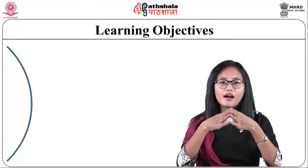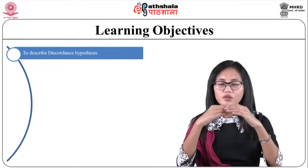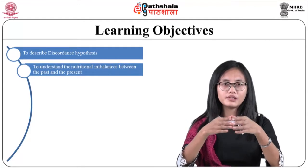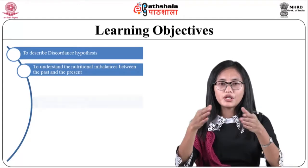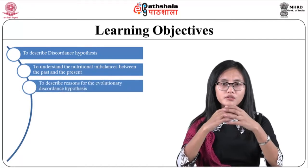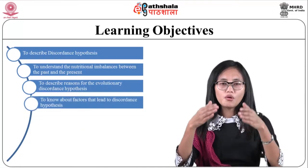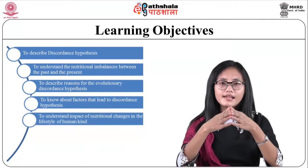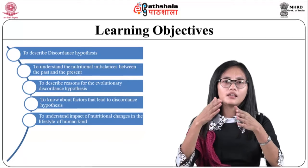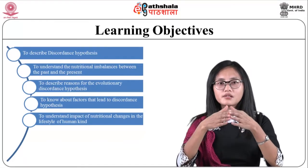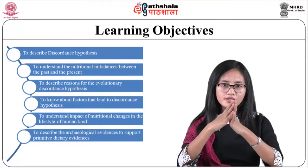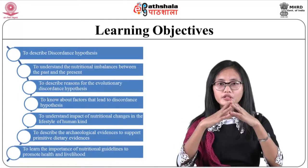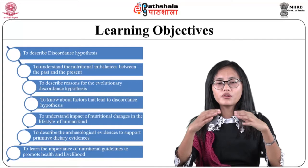The learning objectives of the module are: number one, to describe the discordance hypothesis; number two, to understand the nutritional imbalances between the past and the present; number three, to describe reasons for the evolutionary discordance hypothesis; number four, to know about factors that lead to the discordance hypothesis; number five, to understand the impact of nutritional changes in the lifestyle of humankind; number six, to describe the archaeological evidences to support primitive dietary evidences; and number seven, to learn the importance of nutritional guidelines to promote health and livelihood.